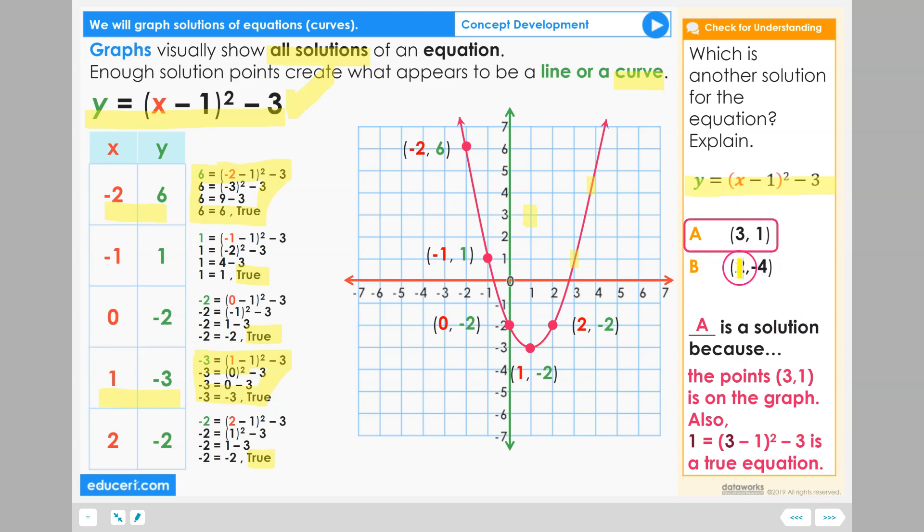The point that didn't work, positive 2, negative 4, would be located positive 2, negative 4, would be in this region, which is not part of the solutions graph.